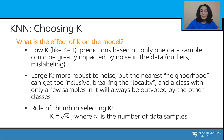Thinking of the other extreme, when k equals the size of the whole dataset, predictions will basically be the same for every new data point based on majority vote across the whole dataset. A good rule of thumb is to choose the k value not too high, not too low, but somewhere lower than the training data size — around the square root of that particular sample size.